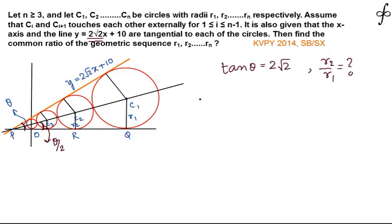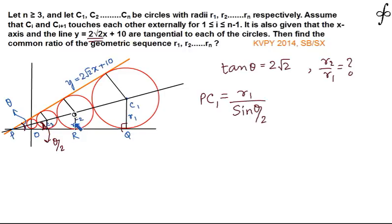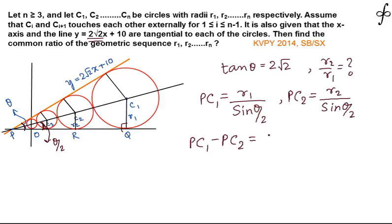From the figure, the length PC1 must equal r1 / sin(θ/2), because this angle is 90°: sin(θ/2) = perpendicular / hypotenuse = r1 / PC1. Similarly, PC2 = r2 / sin(θ/2). Therefore PC1 − PC2 = (r1 − r2) / sin(θ/2).